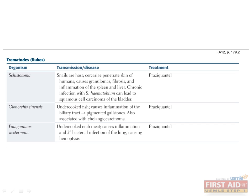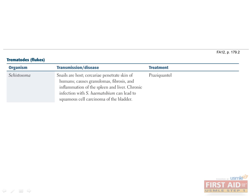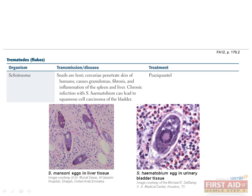Now onto our three trematodes, which can all be treated with praziquantel. Trematodes are non-segmented flatworms with complex life cycles that involve snails as an intermediate host. First are the schistosomas, whose larvae are released into fresh water and penetrate through the skin. Schistosoma mansoni and Schistosoma haematobium are the two species to know. Early infection presents with constitutional symptoms and granulomas, fibrosis, and inflammation of the spleen and liver. Late manifestations include portal hypertension due to S. mansoni infection, and maturation of S. haematobium in blood vessels supplying the bladder can result in squamous cell carcinoma of the bladder, presenting with hematuria, dysuria, increased frequency, and urgency. Remember: portal hypertension with S. mansoni; squamous cell bladder cancer with S. haematobium.